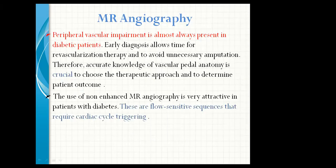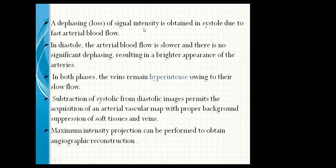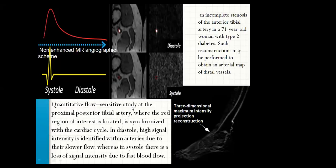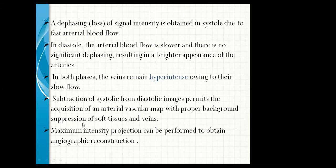MR angiography. Peripheral vascular impairment is almost always present in diabetic patients. Early diagnosis allows time for revascularization therapy and to avoid unnecessary amputation. Therefore, accurate knowledge of vascular anatomy is crucial to choose the therapeutic approach and determine patient outcome. The use of non-enhanced MR angiography is very attractive in patients with diabetes. These are blood-sensitive sequences that require cardiac cycle triggering. A dephasing loss of signal intensity is obtained in systole due to fast arterial blood flow, while in diastole, the arterial blood flow is slower, resulting in a brighter appearance of the arteries. Subtraction of systolic from diastolic imaging permits acquisition of an arterial vascular map with proper background suppression of soft tissue and veins.